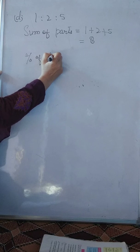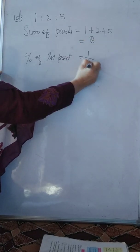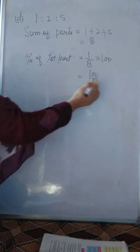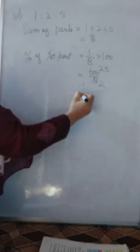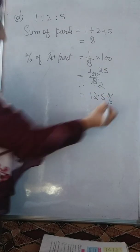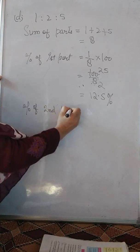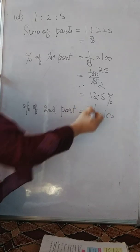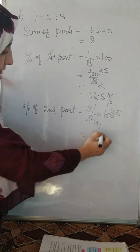Ab hame karengi one by one inki percentage. Percentage of first part. First part is one divided by sum into karengi hundred. That is hundred by eight. Yehaan par iski cancellation karengi four se. Twenty five. Twenty five ko divide by karengi two. Toh nikalega twelve point five percent. Percentage of second part. Second part is two divided by total into hundred. Two vana two four are, four vana four twenty five are hundred. Twenty five vana twenty five. Twenty five percent.